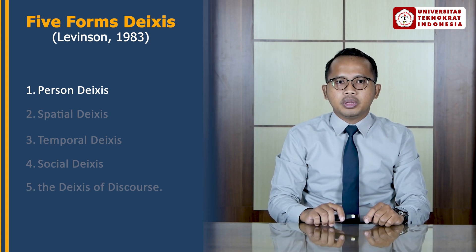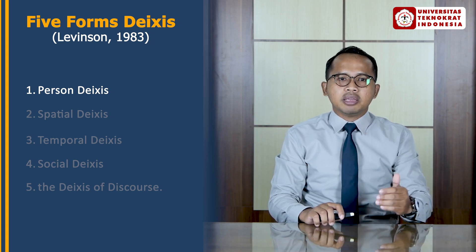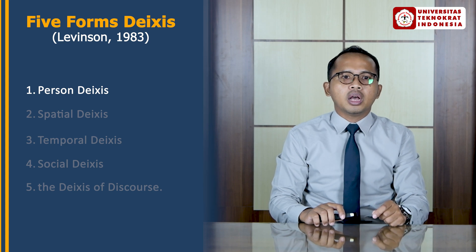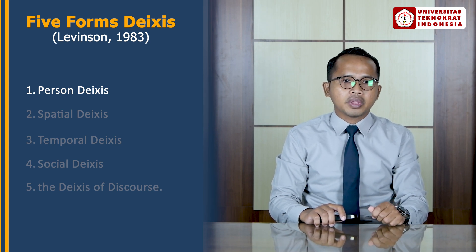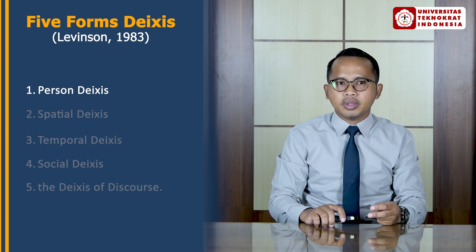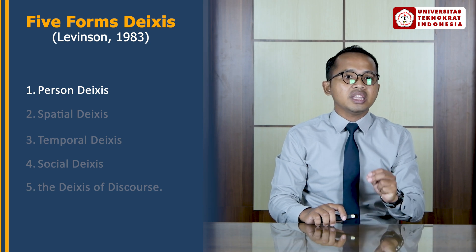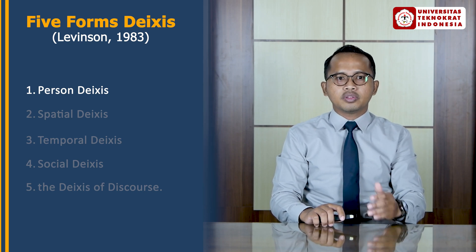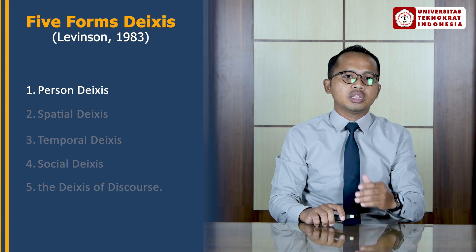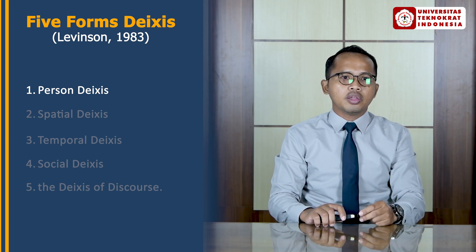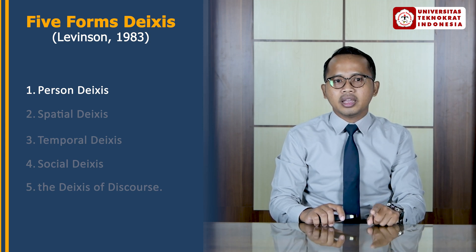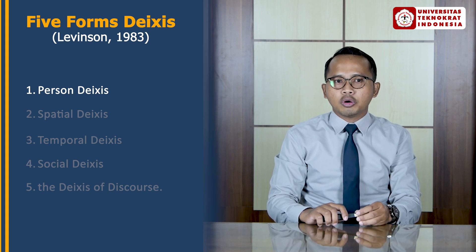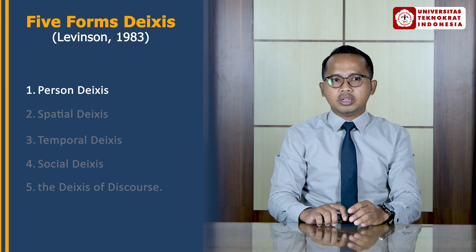The first one is person deixis. As the name implies, it is about persons, and this information is grammaticalized by pronouns. Typically, a first-person singular pronoun is used for the speaker, second person for the addressee, and minimally, a third-person category for neither speaker nor addressee. In English, for singular we have I, he, she, and it; for plural we have we and they; and you can be used as both singular and plural in different contexts. Languages differ in the amount of contextual information included in pronouns — for example, in Arabic they have more personal pronoun distinctions.